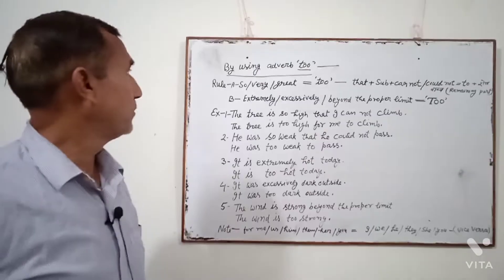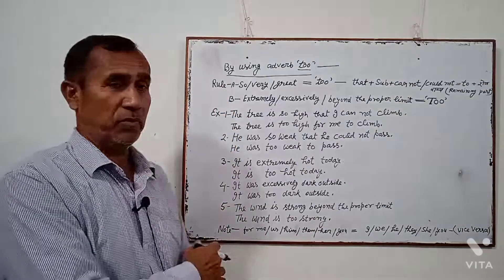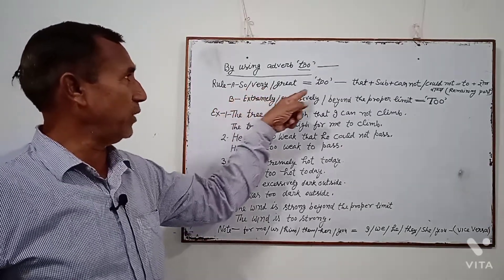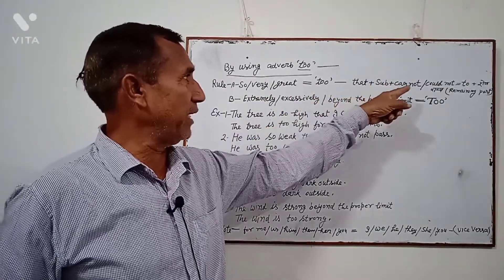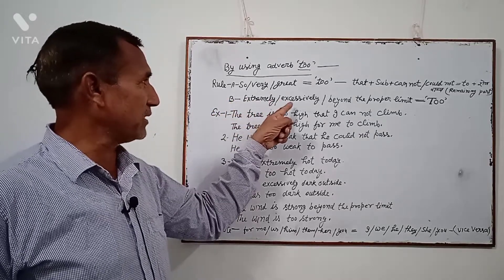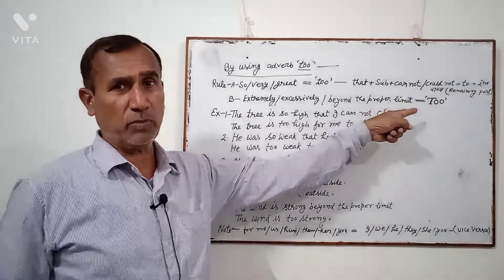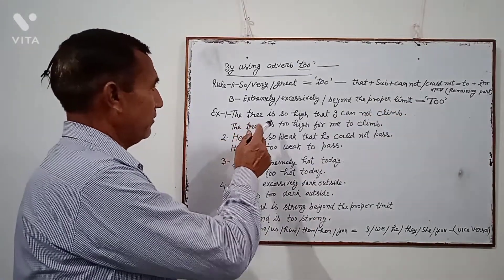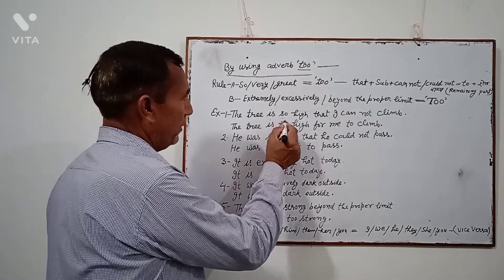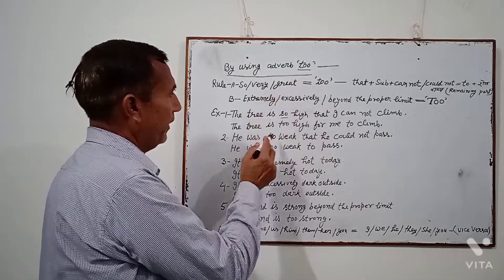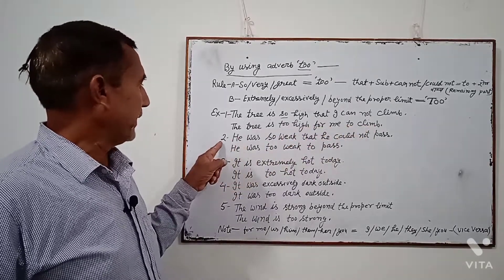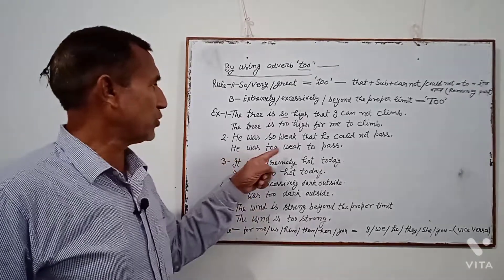Now in Hindi, by using Adverb 'too': Rule A में 'so' या 'very' या 'great' को Adverb 'too' में बदल कर, 'that plus subject plus cannot/could not' को 'to' में बदल कर आगे remaining part of sentence लिखा जाएगा। Rule B में 'extremely' या 'excessively' या 'beyond the proper limit' को Adverb 'too' में बदल देना है। Example 1: 'That tree is so high that I cannot climb' → 'so' के स्थान पर 'too' लगा दिया → 'That tree is too high for me to climb.' Example 2: 'He was so weak that he could not pass' → 'He was too weak to pass.'